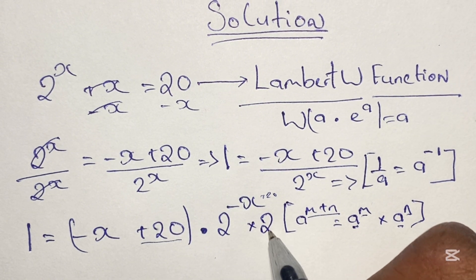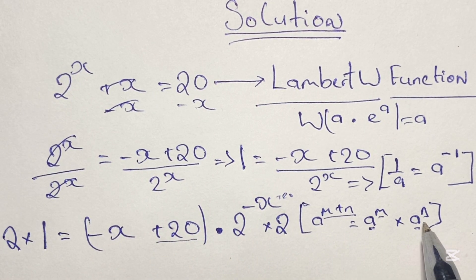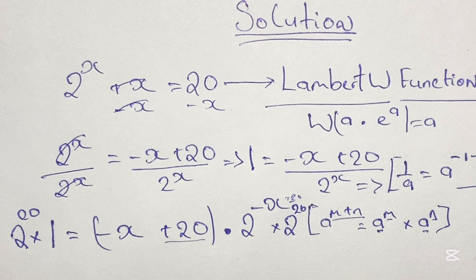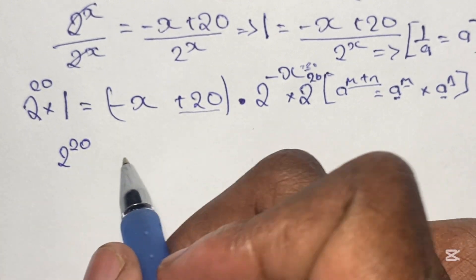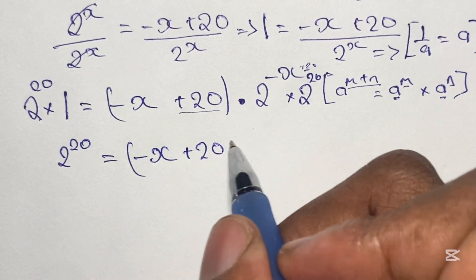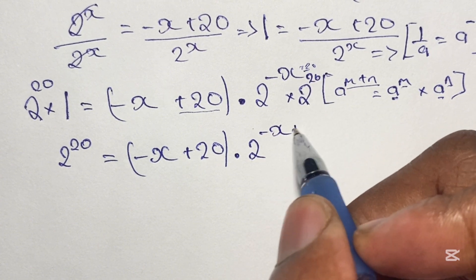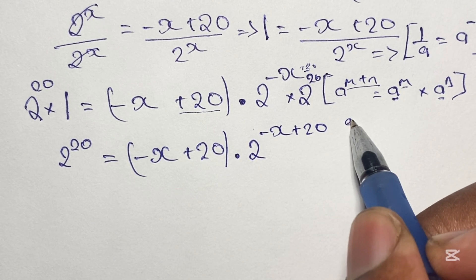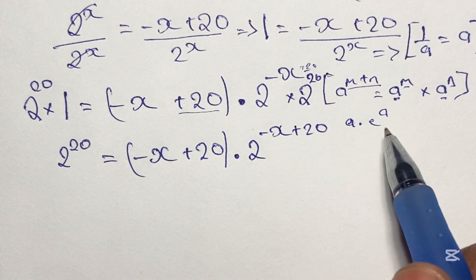So we multiply both sides by 2 to the power of 20, because we want the 20 in the exponent. On the left we have 2 to the power of 20 times 1, and since anything multiplied by 1 is itself, that gives us 2 to the power of 20. This equals negative x plus 20, in brackets, times 2 to the power of negative x plus 20, according to the rule. Our equation is now starting to look like a times e to the power of a, with negative x plus 20 appearing in both the base and the power.